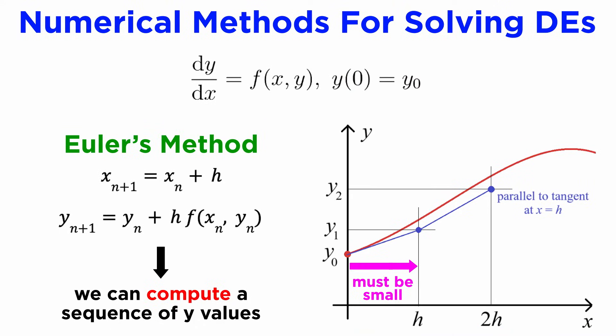One issue with Euler's method is that you need an extremely tiny step size h in order to get accurate results, which makes computations slow and susceptible to rounding errors. This motivated the development of better numerical methods, so let's take a look at some of those now.